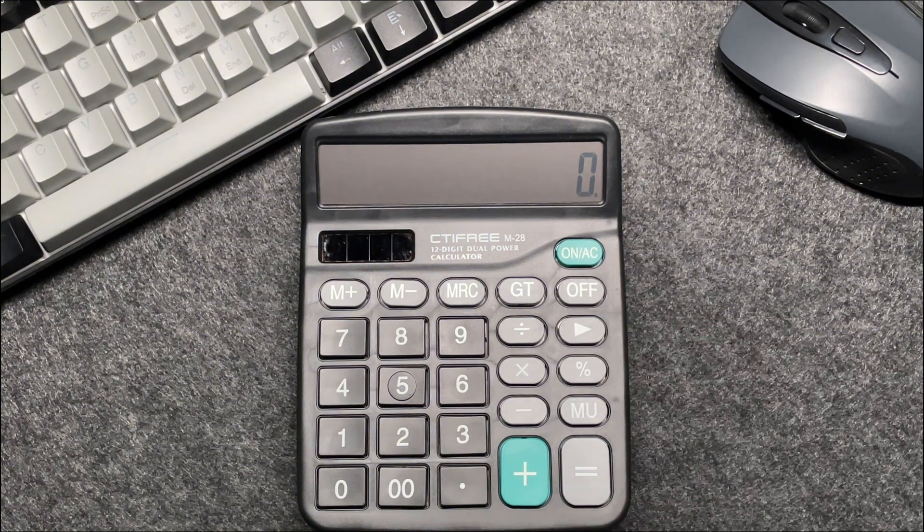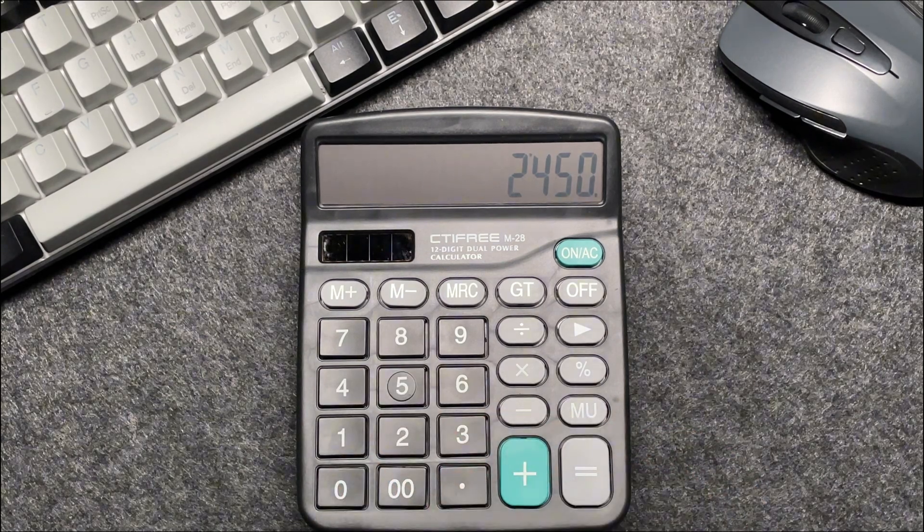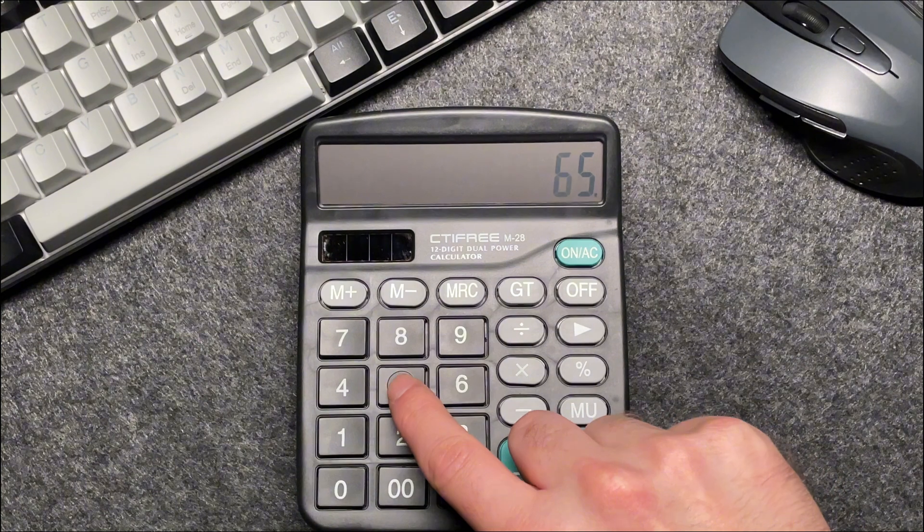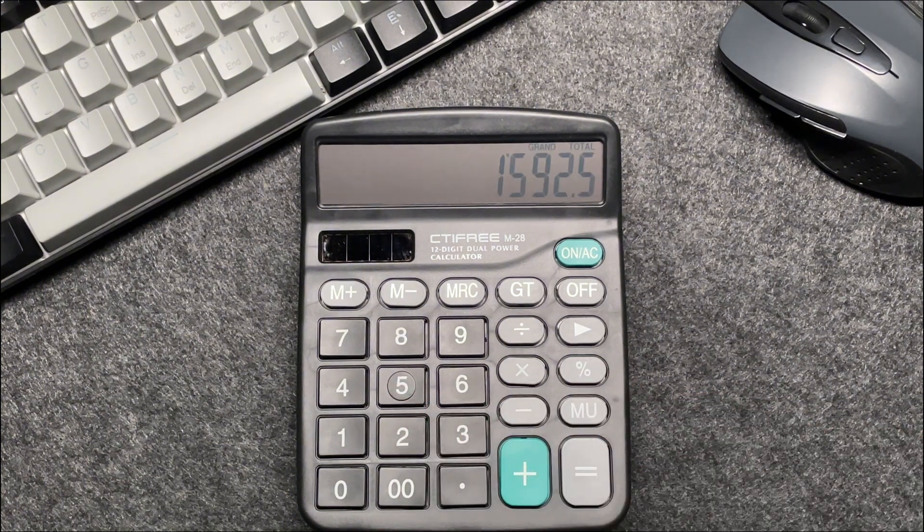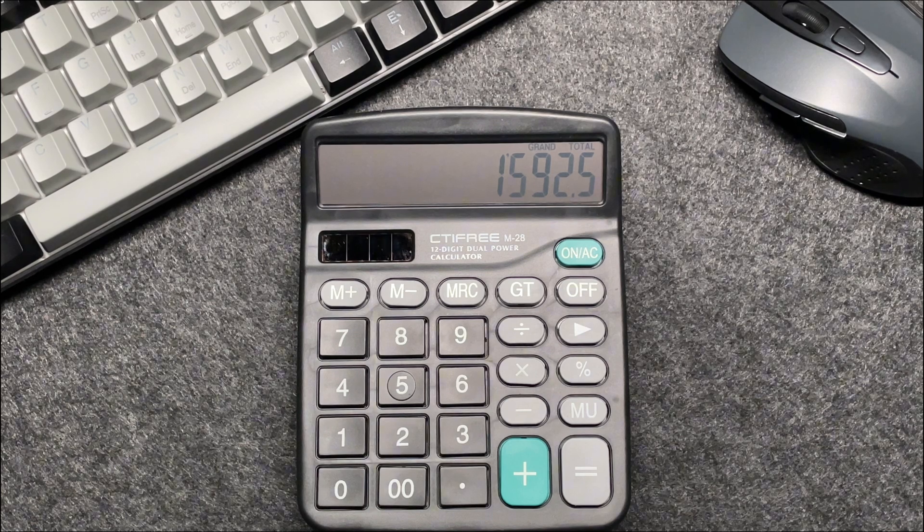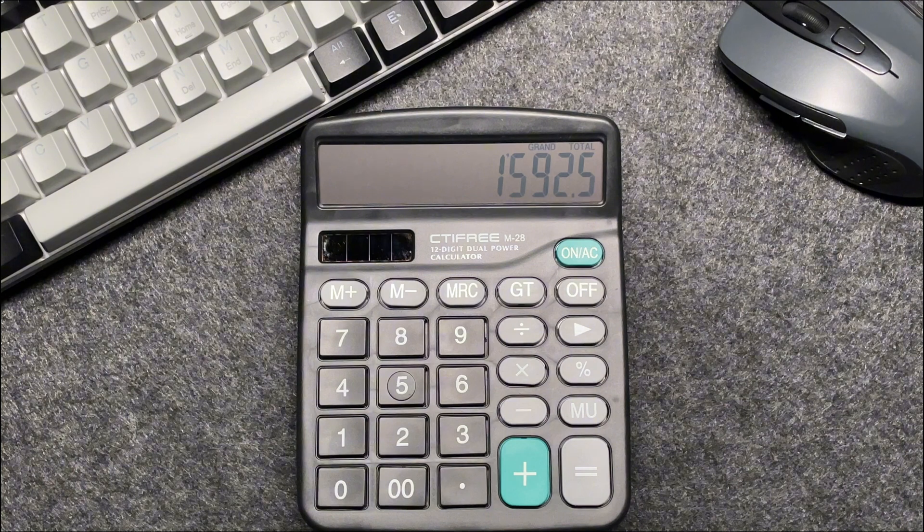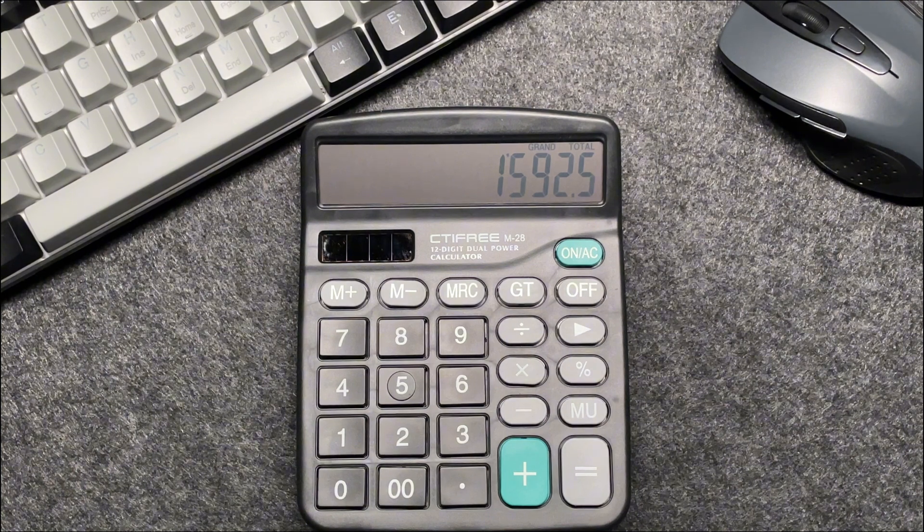Imagine you have an item priced at $2,450. Let's press the multiply button. Then let's multiply it by 65. Press the percentage button. So after that 35% off, the final price comes out to be $1,592.50. This quick method saves you time and ensures accuracy.